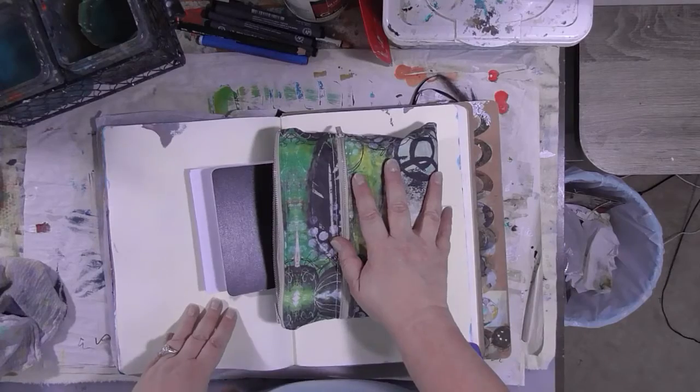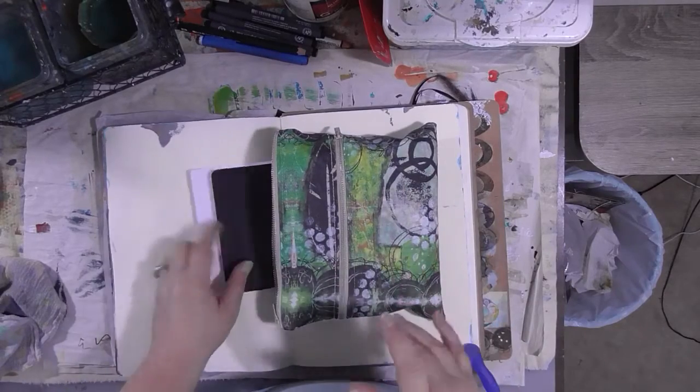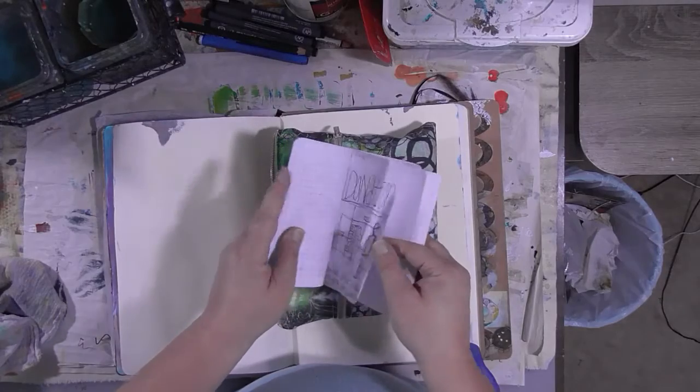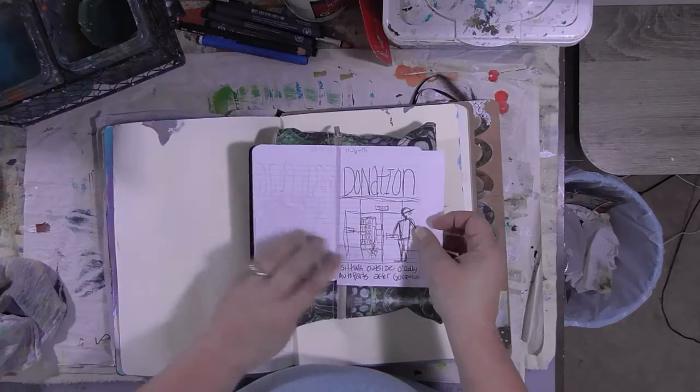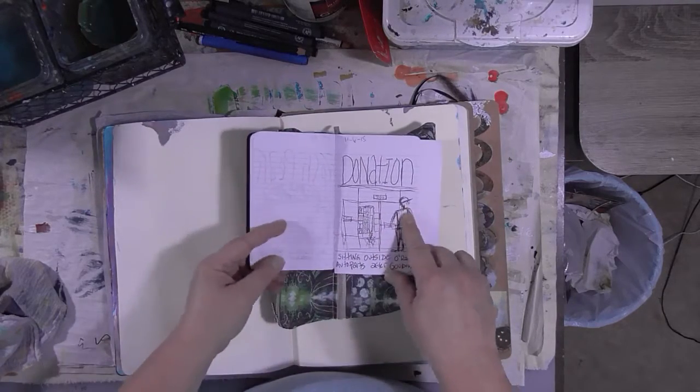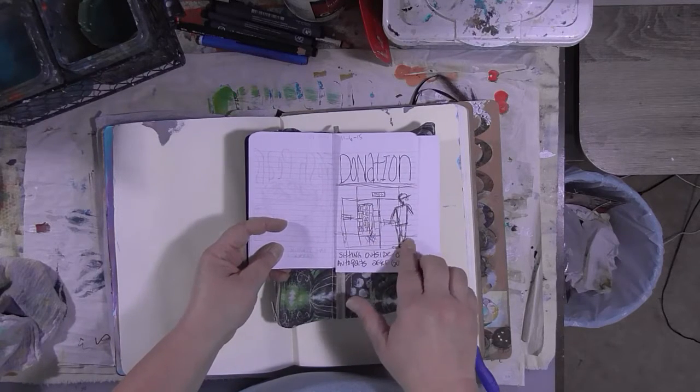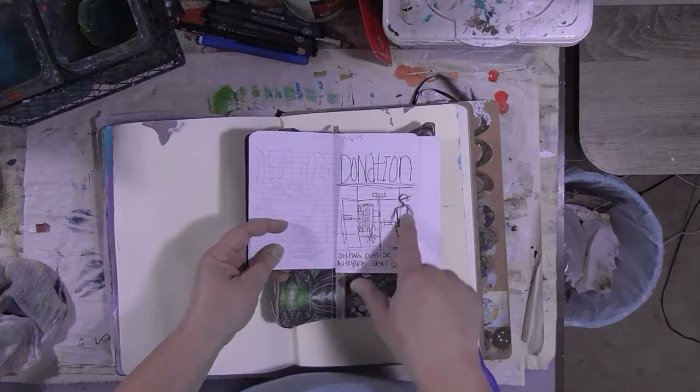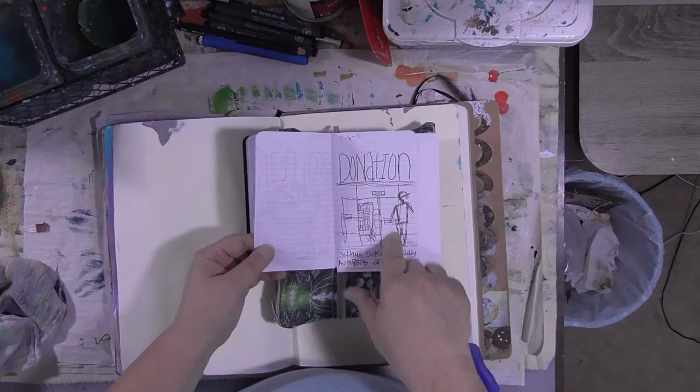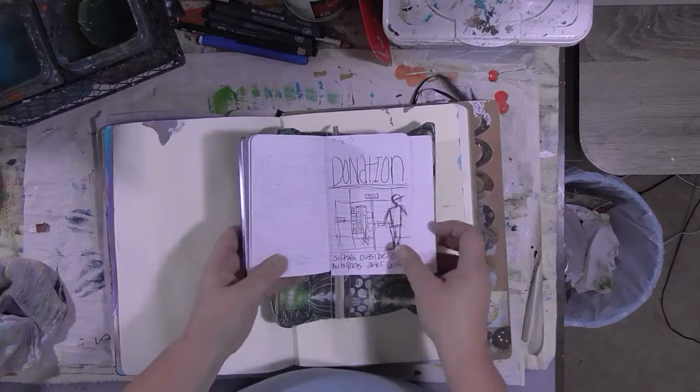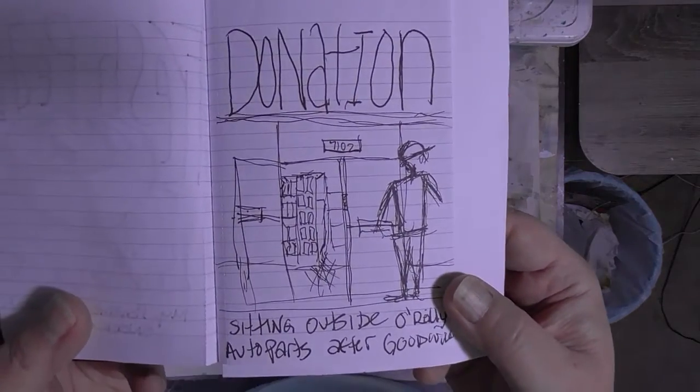That being said, here's my little travel sketch bag and here is my book. We went out and like I said, we were parked around the front of Goodwill today and I was just sitting outside of O'Reilly's Auto Parts and I did a little sketch of their front door which was open and there were people going in and out. So I sketched in a little person and I titled it Donation because it was after I had done the Goodwill donation and I think it turned out pretty cute.